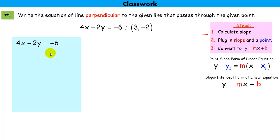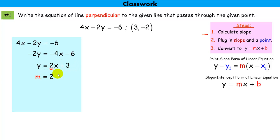I'm going to convert the given line into slope-intercept form to read its slope. The slope of this line is 2. The slope of a line perpendicular to this one is the negative reciprocal, which is negative 1 over 2.